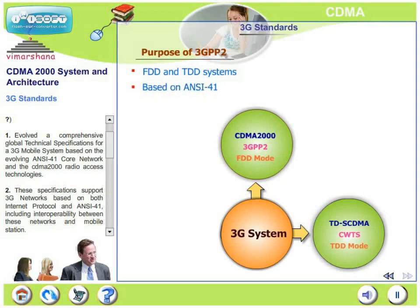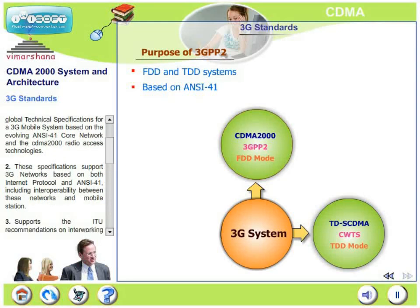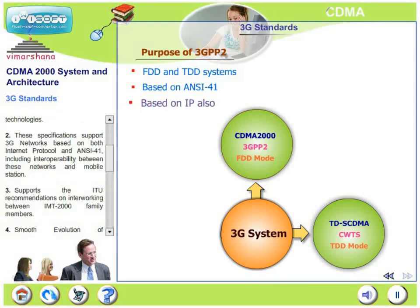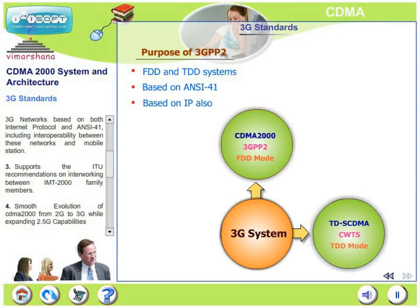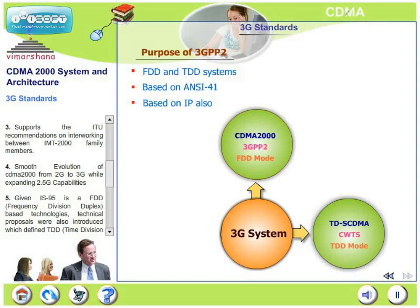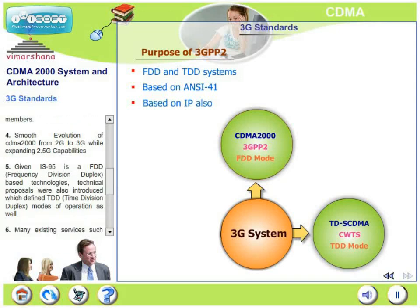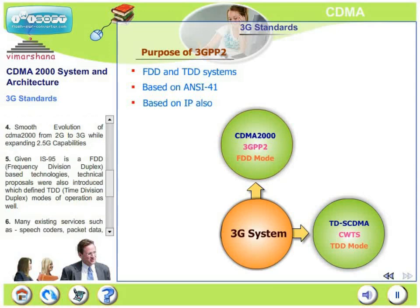These specifications support 3G networks based on both internet protocol and ANSI-41, including interoperability between these networks and the mobile station. 3GPP-2 supports the ITU recommendations on interworking between IMT-2000 family members, and smooth evolution of CDMA 2000 from 2G to 3G while expanding 2.5G capabilities — with compatibility both upward and downward across all evolutions or flavors of CDMA networks.